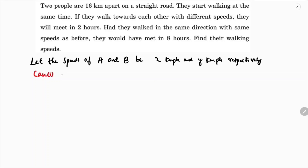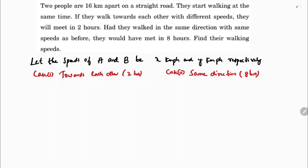Case one: towards each other. They will meet in two hours. A and B are already 16 km apart, so the total distance is 16 km.